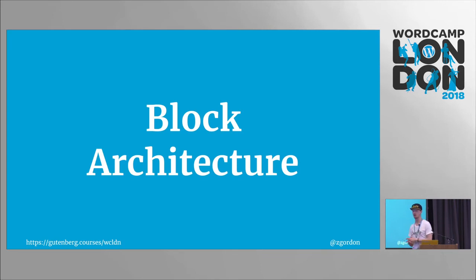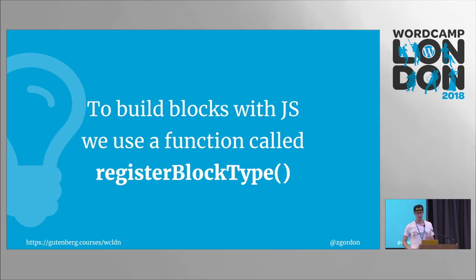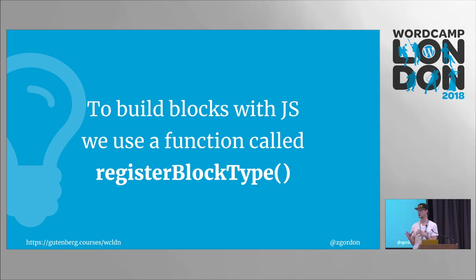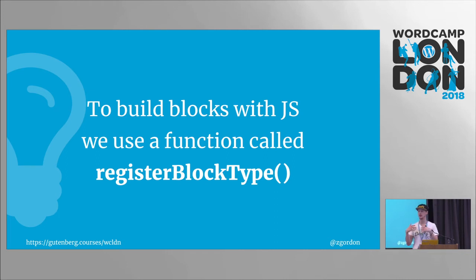So now we can start talking about the actual architecture of a block. To build blocks, we use a function called registerBlockType. This is a JavaScript function that has two parameters and a bunch of settings. Right now, most of the blocks are being registered in JavaScript — WordPress builds your site, launches the editor into the browser, and then once it's in the browser, it figures out what blocks are available and makes those blocks available.